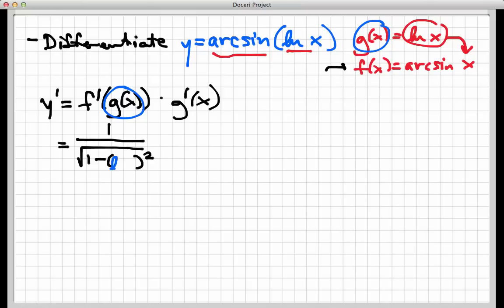So that gets kind of tiny, but it's 1 over radical 1 minus natural log of x squared. And then I have to end this off by multiplying by the derivative of g. g again is the natural log function, and so that is 1 over x for its derivative.